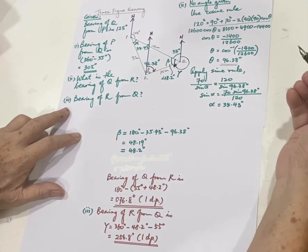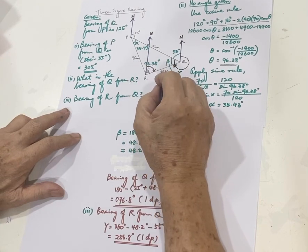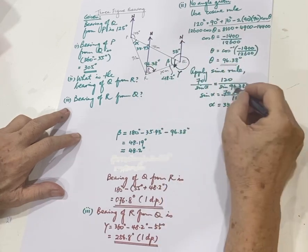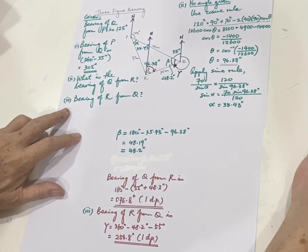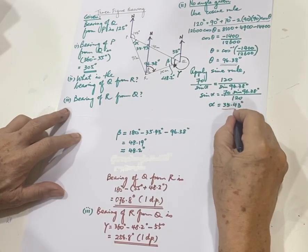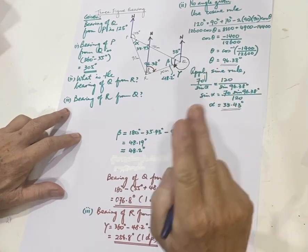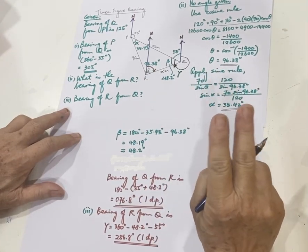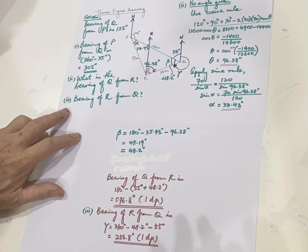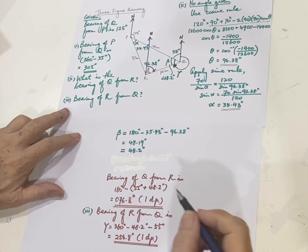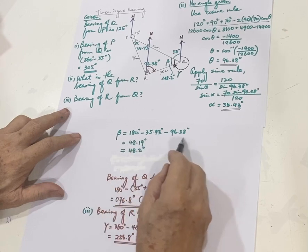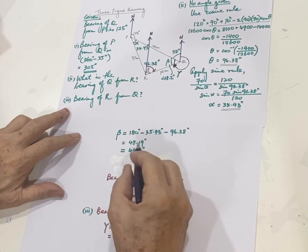So 70 over sine alpha equals to 120 over sine 96.38. So sine alpha, you will do the calculating again, please. Intermediate answer, keep two decimal places. Especially for IGCSE student. For SPM people, in fact, you must give four sig figs. So with all that, you get beta indirectly, by taking three angles of a triangle equal to 180.